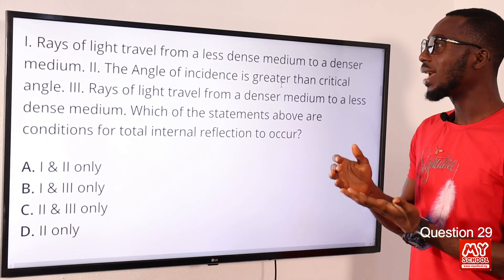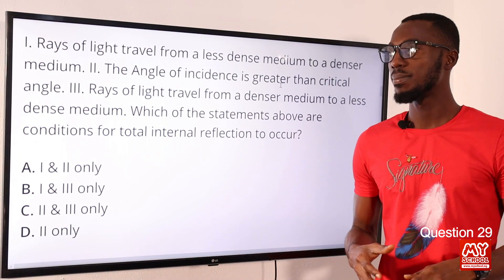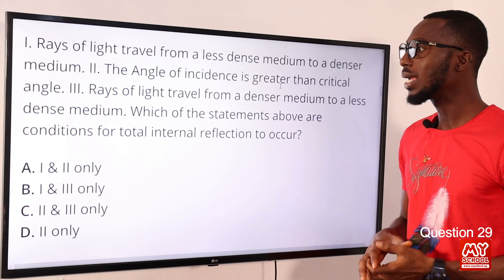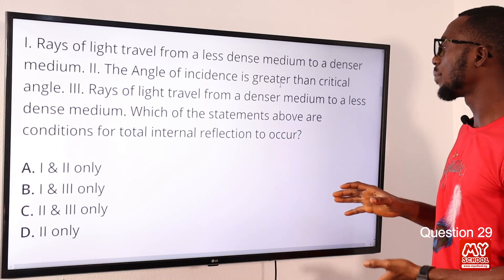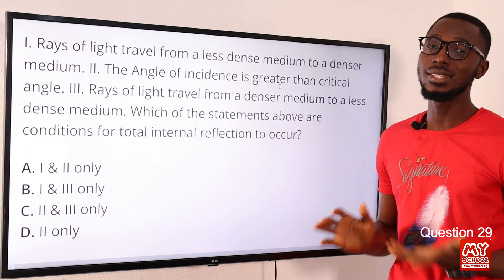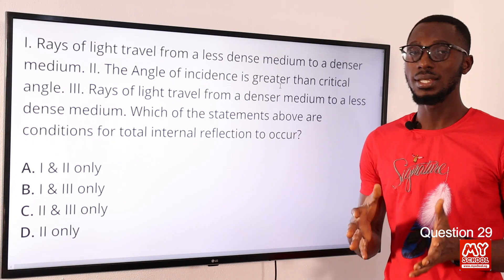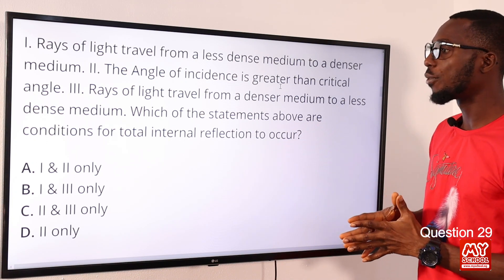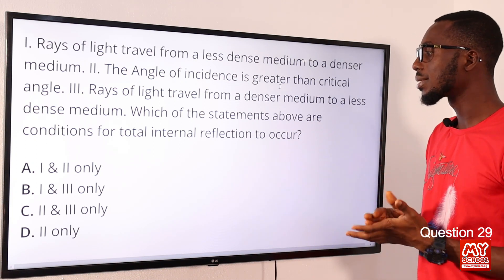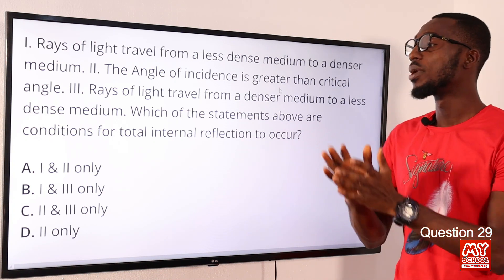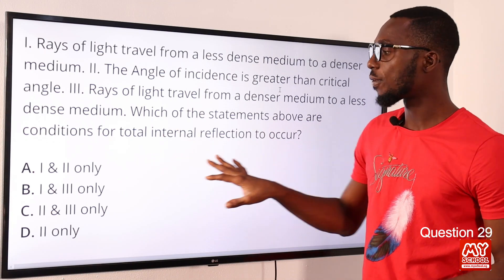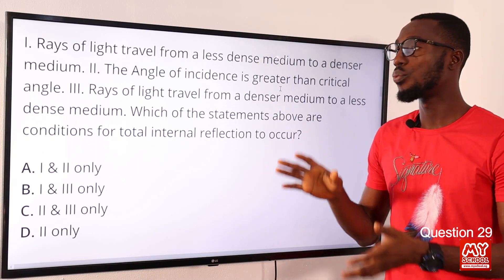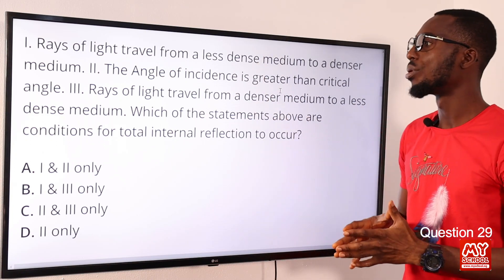Question 29: Statement one — a ray of light travels from a less dense medium to a denser medium. Statement two — the angle of incidence is greater than the critical angle. Statement three — rays of light travel from a denser medium to a less dense medium. We have to validate which of these statements are conditions for total internal reflection to occur.